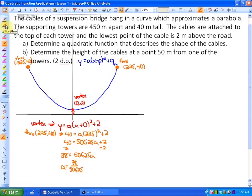So our function to represent, in other words, our answer to a, our function to represent this would be, so an answer to a, y equals 38 over 50,625 x squared, or x plus 0 squared, we don't need the plus 0, plus 2. That's our answer to a.